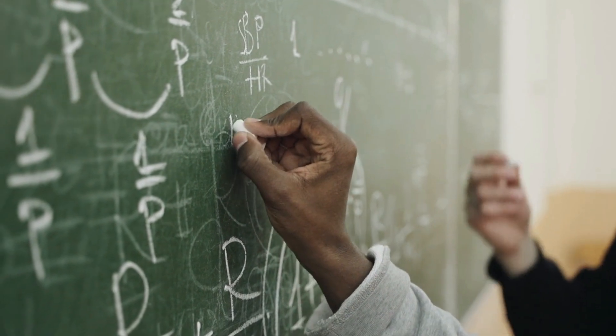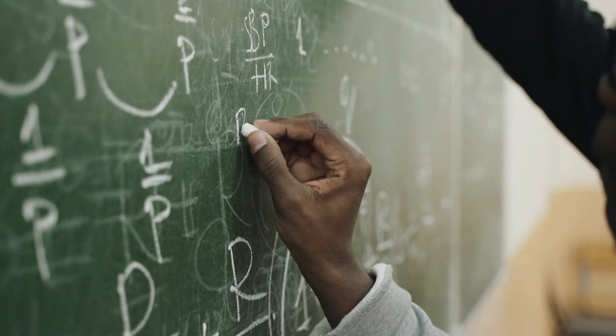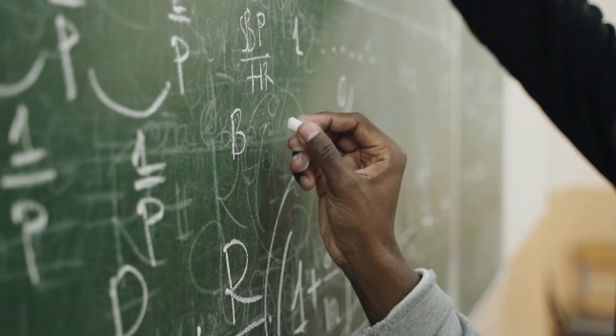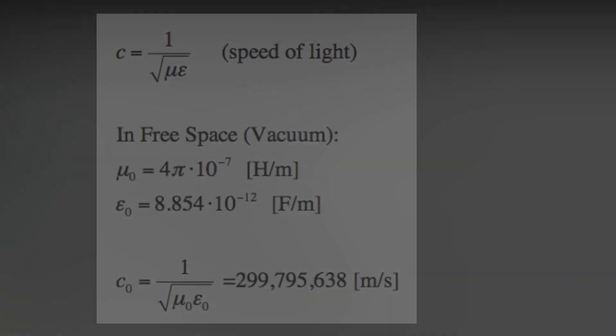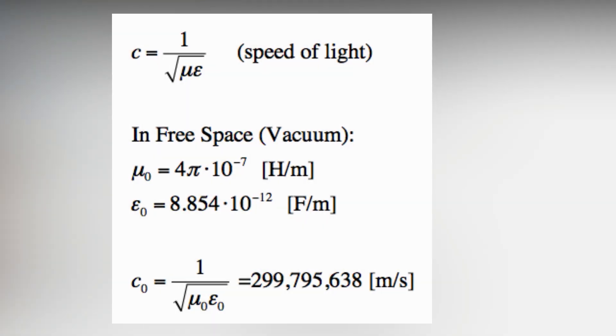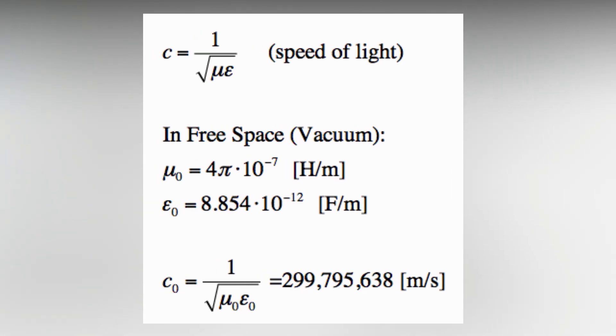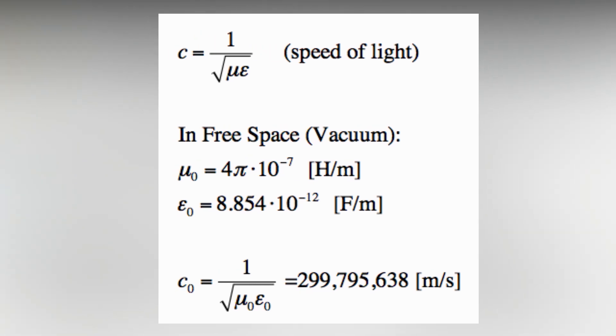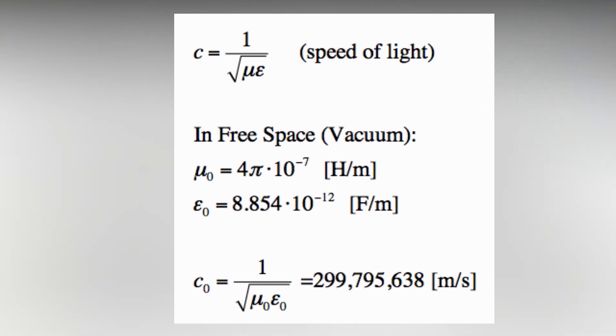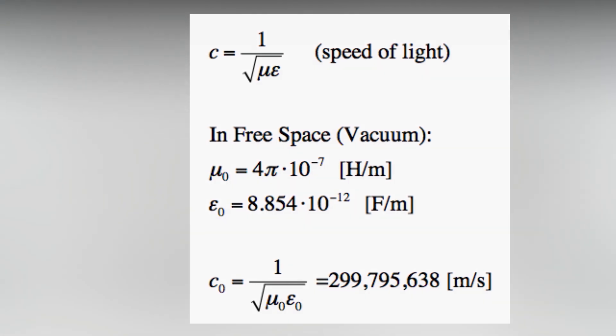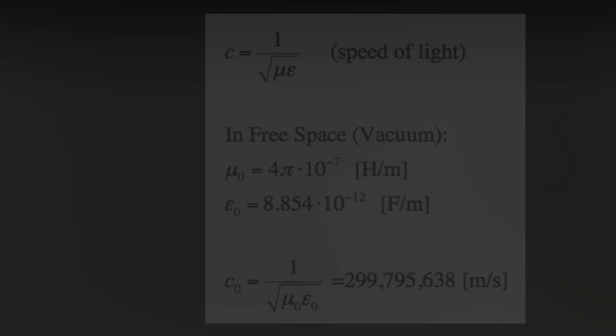Surprisingly, the precise speed of light is known and serves as the foundation for most other measurements. The speed of light in a vacuum is exactly 299,792,458 meters per second or 983,571,056 feet per second.